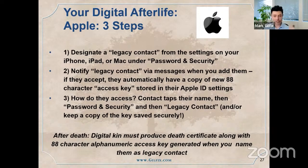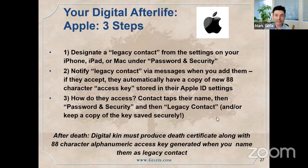After you pass away, what do they do? Your digital kin must produce a death certificate along with this 88-character alphanumeric access key generated when you named them as a contact. You can name them, but the good thing — depending on your view of security — is that it's a little bit harder for someone to get access. You can't just name them and they get access; they have to have this super long 88-character alphanumeric key.